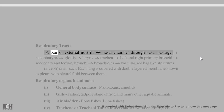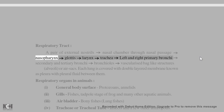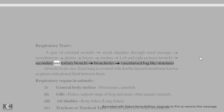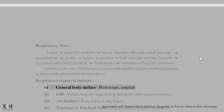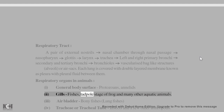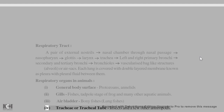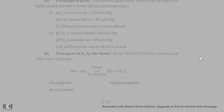Respiratory tract: a pair of external nostrils → nasal chamber → nasopharynx → glottis → larynx → trachea → left and right primary bronchi → secondary and tertiary bronchi → bronchioles → alveoli (vascularized bag-like structures or air sacs). Each lung is covered with a double-layered membrane known as the pleura, with pleural fluid between them. Respiratory organs in animals: (1) general body surface — protozoans; (2) gills — fishes, tadpole stage of frog, and many other aquatic animals; (3) air bladder — bony fishes and lung fishes; (4) tracheal tubes — insects and a few other arthropods; (5) lungs — all land vertebrates including amphibians, reptiles, aves, and mammals. Intercostal muscles: the muscles present between the ribs.